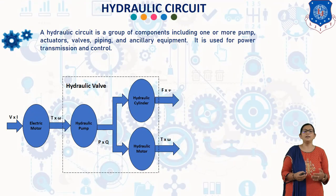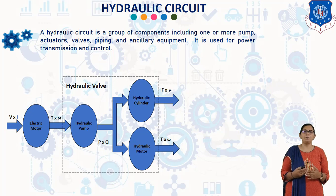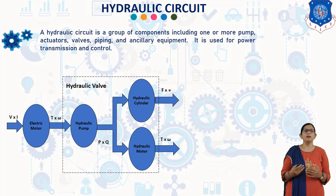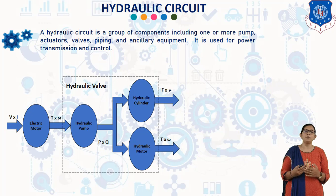Now, first of all, what is a Hydraulic Circuit? A Hydraulic Circuit is a group of components including work forms, actuators, valves, piping, and auxiliary equipment. It is used for power transmission and output. A Hydraulic Circuit transmits and controls power from mechanical input to mechanical output by means of liquid.